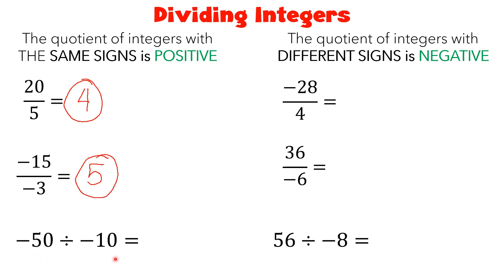How about this one? Negative 50 divided by negative 10. So they are also both negative, it means your answer must be positive. So 50 divided by 10 is also 5, so we got positive 5.